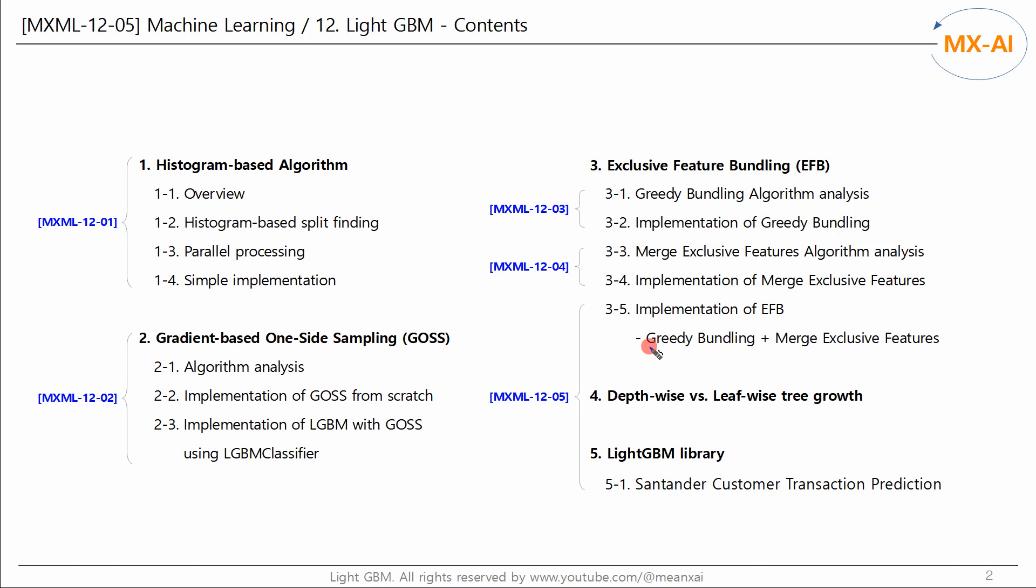In this video, we will use greedy bundling and merge exclusive features algorithms together to complete exclusive feature bundling. And let's take a brief look at the depth-wise and leaf-wise tree growth methods.